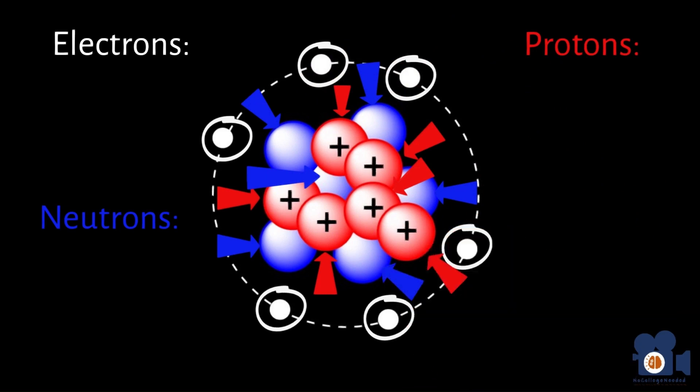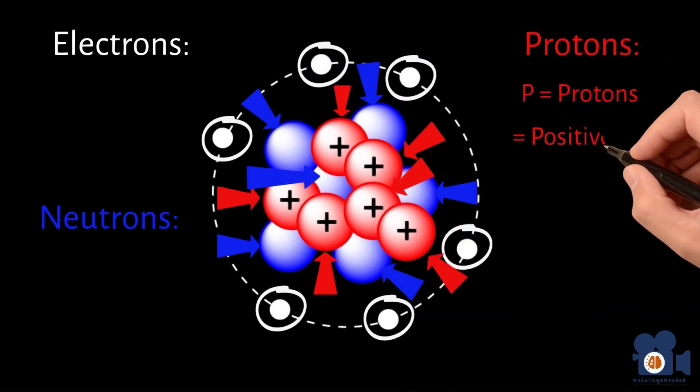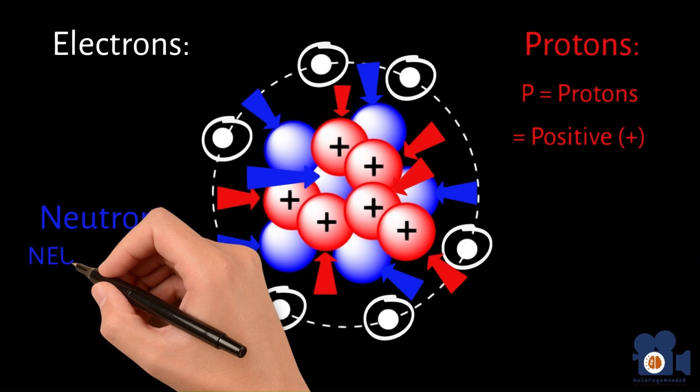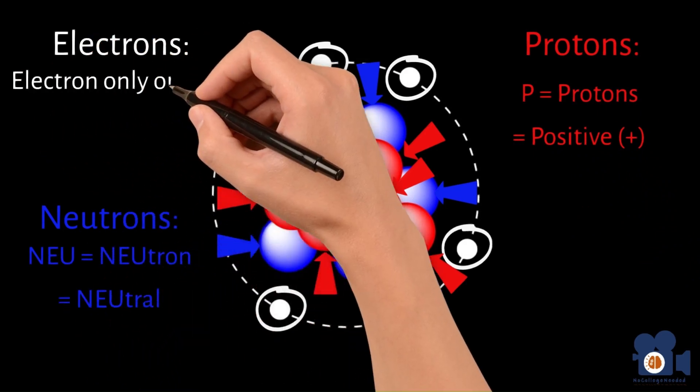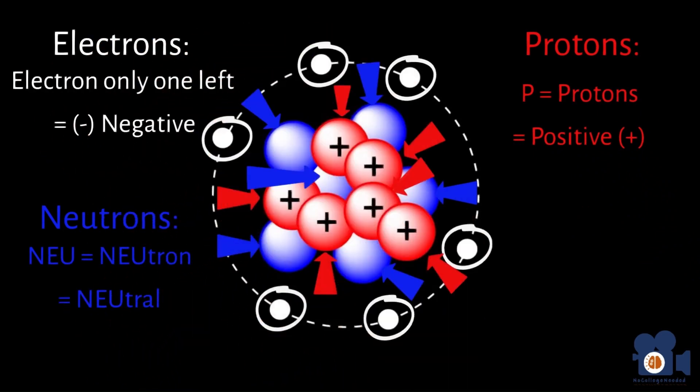A good way to remember all this is the P for proton means positive, N-E-U in neutron is for neutral, and the electron is the only one left being negative. These discoveries ultimately led to the nuclear model.